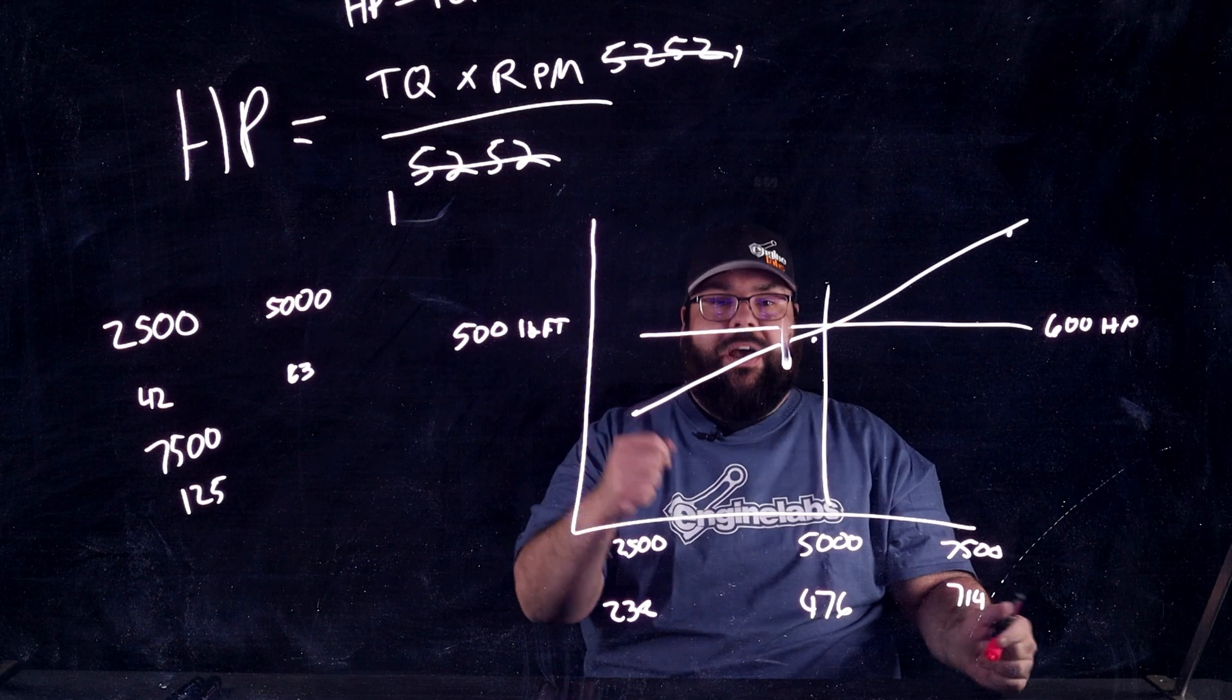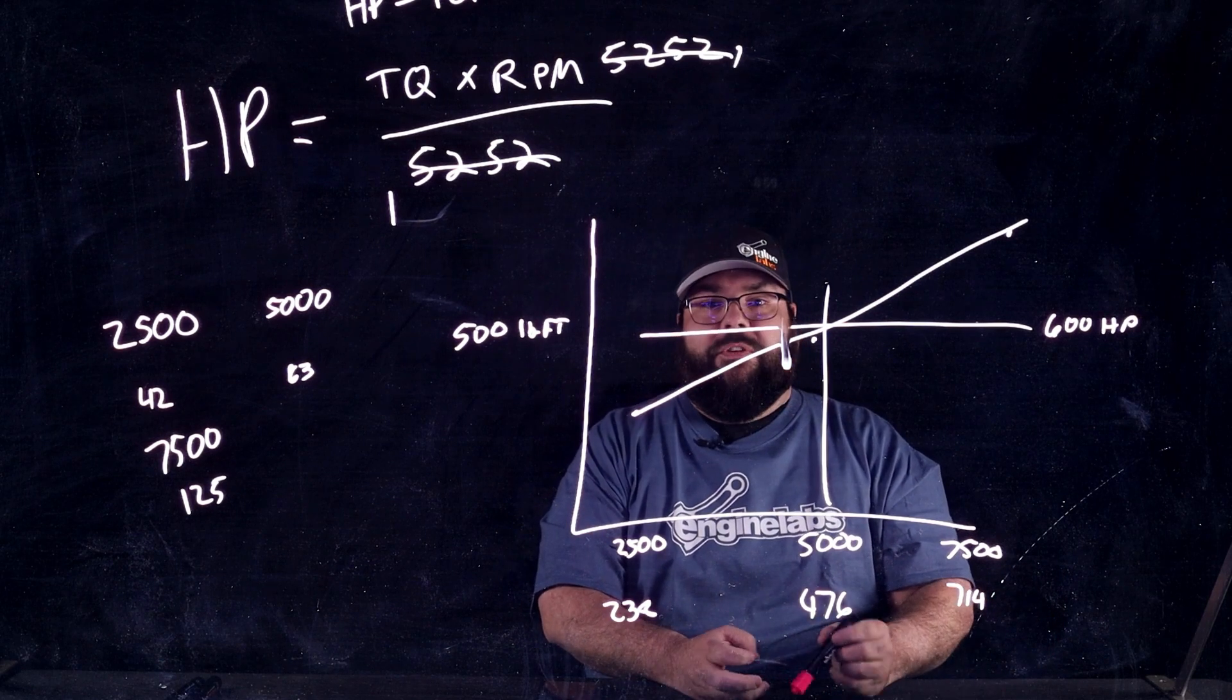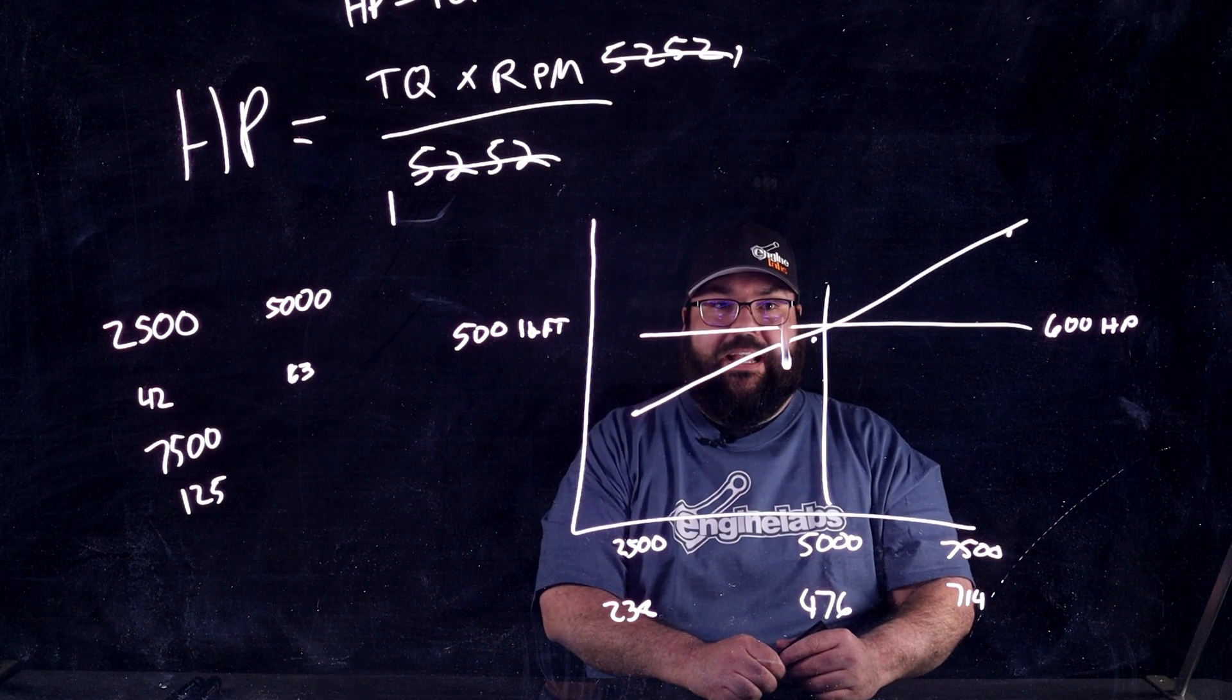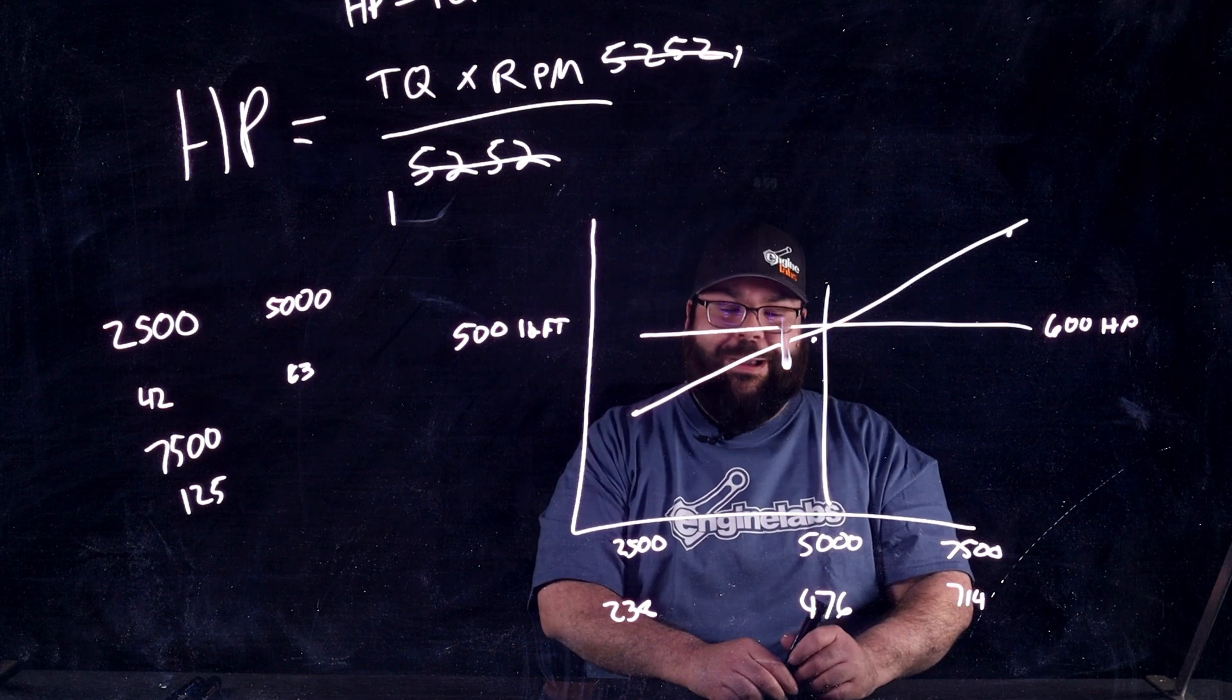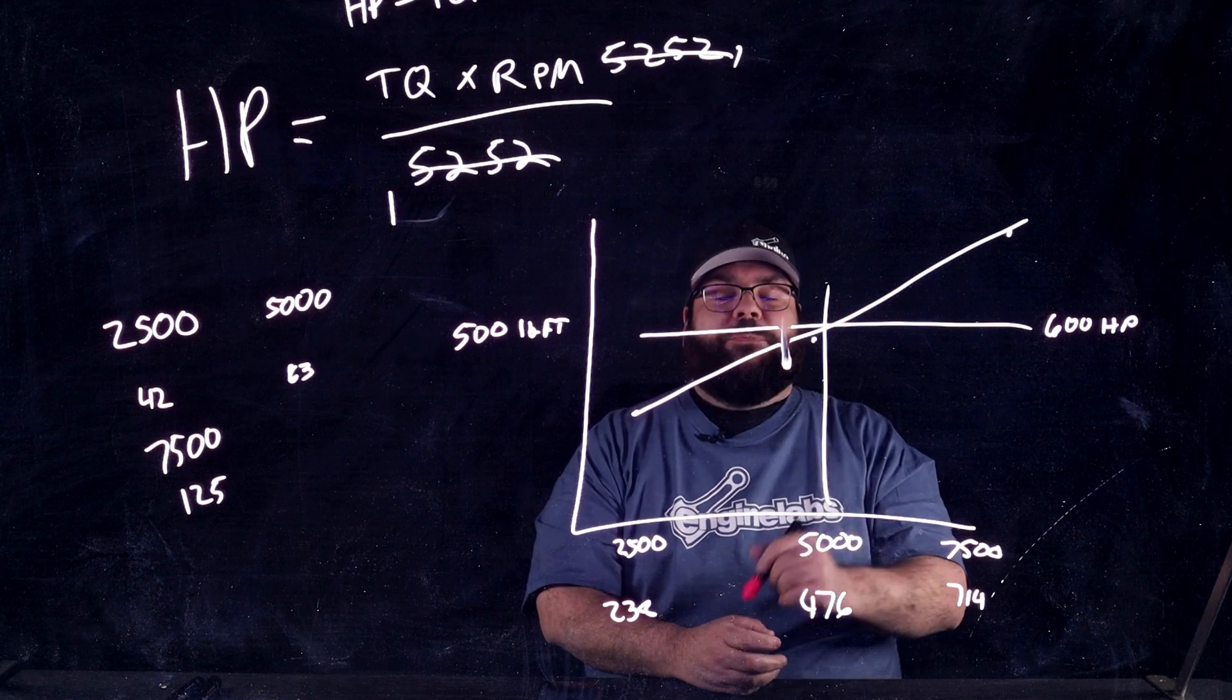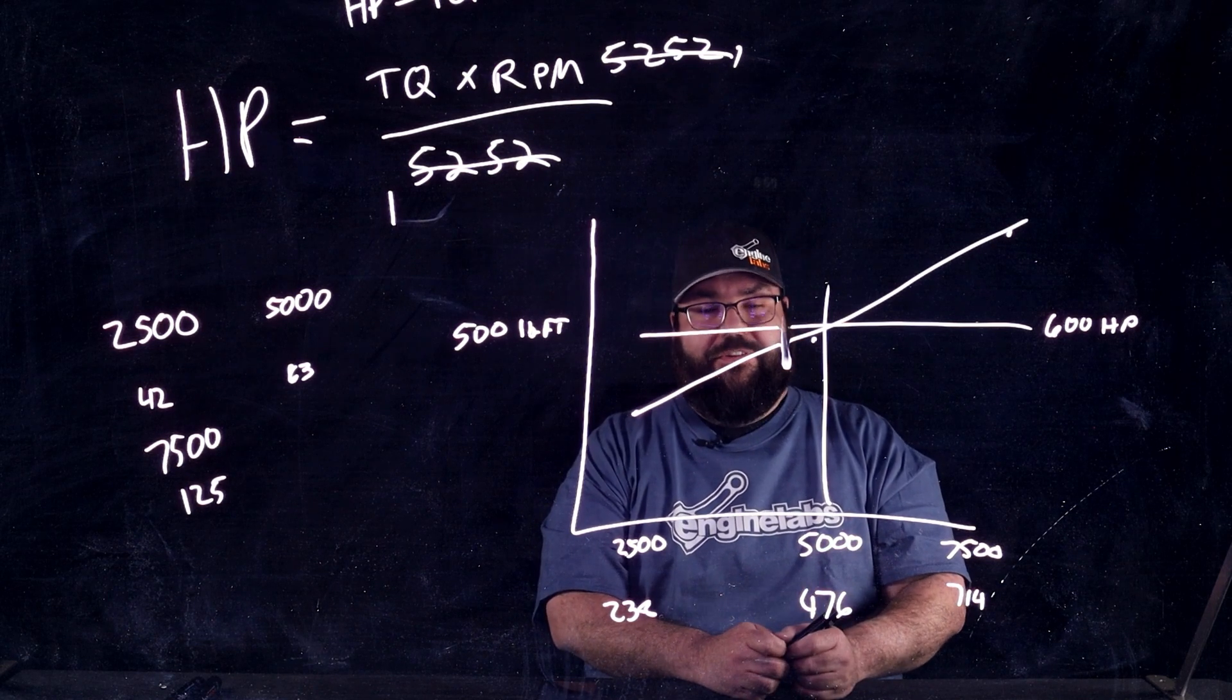But I suggest you go down and look. If this has intrigued you, go ahead and check out that article. We actually talked with an engineer from the Society of Automotive Engineers to really dive into it. And I have since forcibly blocked that from my brain. It hurt. But this explains why horsepower and torque will always cross at 5252 RPM.